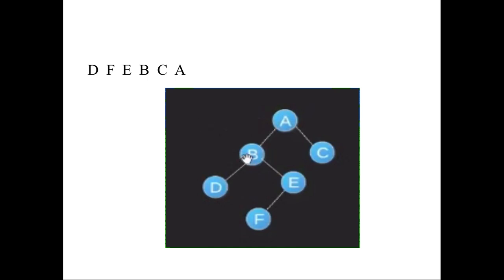According to the post-order traversal, we will visit left, right, then root. So if you visit left node B — B is having the node D as a left node. D will be visited first as the leftmost child. After visiting D, the right child of B will be visited. But E is having again a left child F, so we have to visit the left child F. So F will be visited.